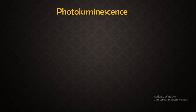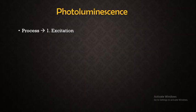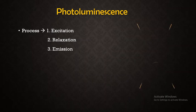Let us continue our discussion with respect to photoluminescence. We have already understood what luminescence is; photoluminescence means the excitation of electrons in the semiconductor is due to incident radiation — that is, because of photons. This process can be divided into three stages: first is excitation, second is relaxation, and third is emission. Let us understand these using the band diagram.